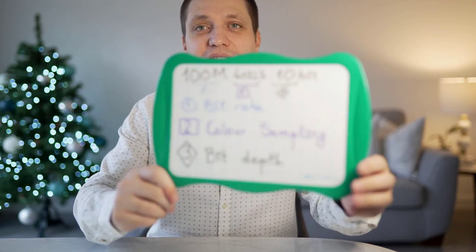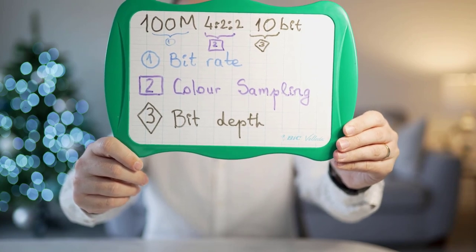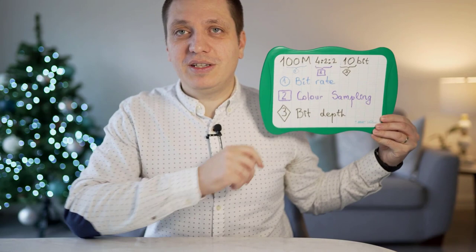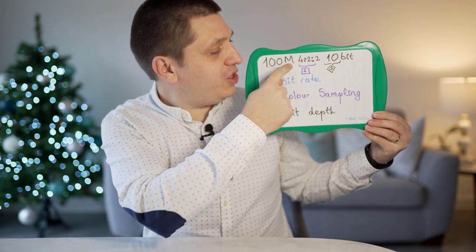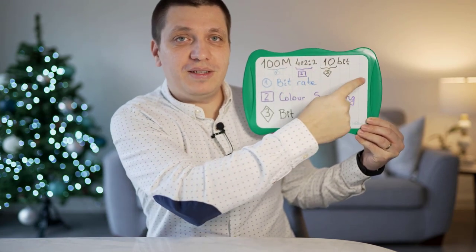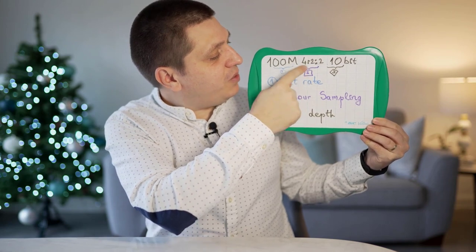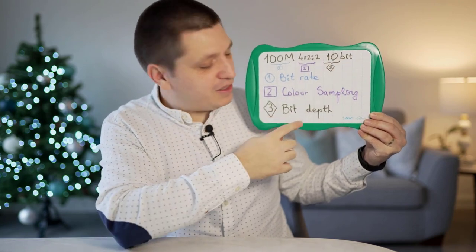I'm going to share now what Sony uses as a quick glimpse of a particular video format notation. We're talking about this notation: 100M, 422, and 10-bit. The 100M represents your bit rate. The 422 represents your color sampling. The 10-bit represents your bit depth.